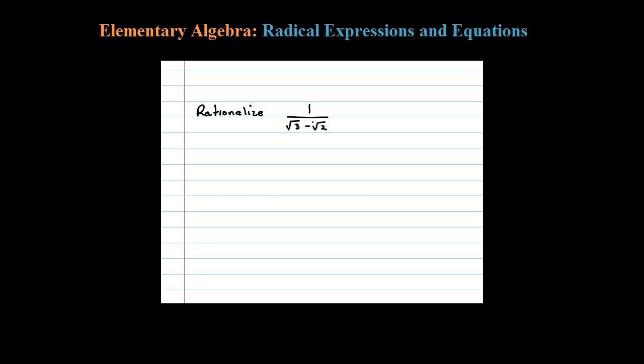Here I'm asked to rationalize with a binomial in the denominator. The way to do that is to multiply numerator and denominator by its conjugate.